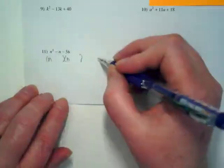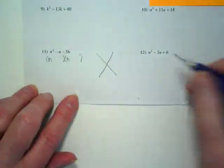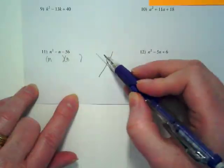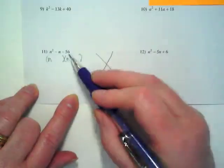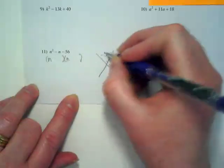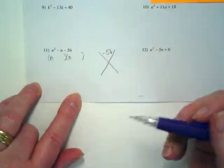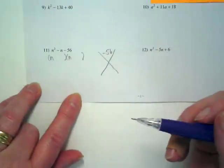Second step is setting up the X puzzle. What number is going to go in the top? What kind of 56? Negative 56. And because we have a negative there, that means we're going to have 1 plus and 1 minus when we come up with our numbers.